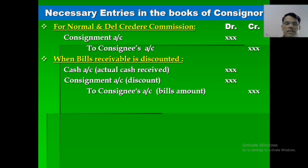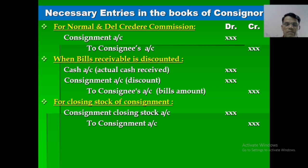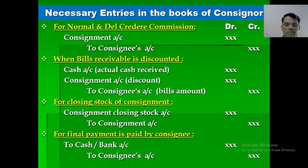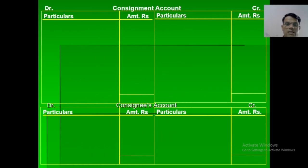When bills receivable are discounted: cash account debited, consignment account debited for the discount amount, to consignee account for the bills amount. For closing stock: consignment closing stock account debited to consignment account. Final payment by consignee: cash and bank account debited to consignee's account.